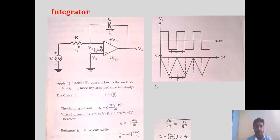This is the expression for V0 of this integrator: V0 = −(1/RC) ∫ VI dT. The output will be the integral of VI with respect to time. This is what the op-amp integrator is.